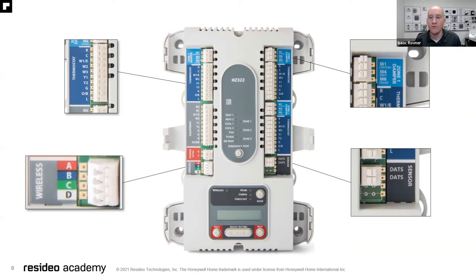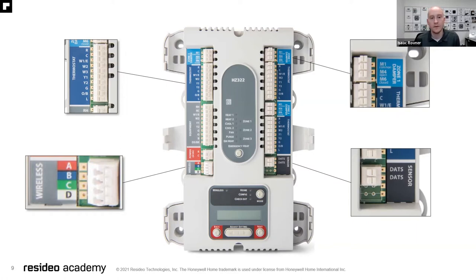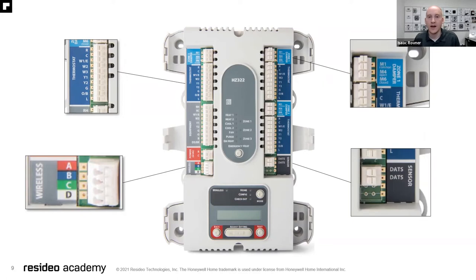We can wire M1, M4, M6 — typically our dampers are spring open, power closed, but some of our products allow you to modify that to power open, spring closed, or power open, power closed, so you do have some flexibility there. What's not enlarged here is our equipment wiring, which is on the left side where that gray terminal box is — that's where you wire the HVAC equipment.